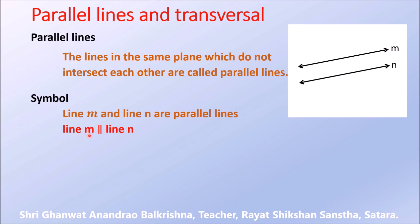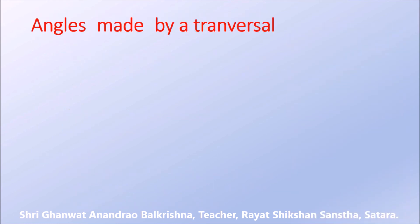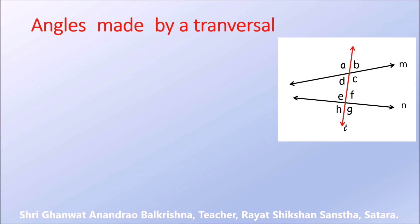This is read as 'line M is parallel to line N.' Definition of transversal: if a line intersects two given lines in two distinct points, then that line is called a transversal of the two given lines.